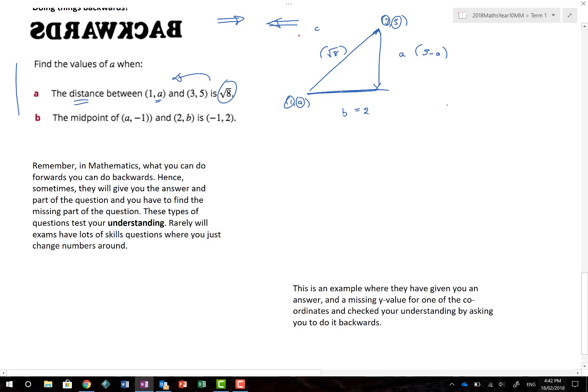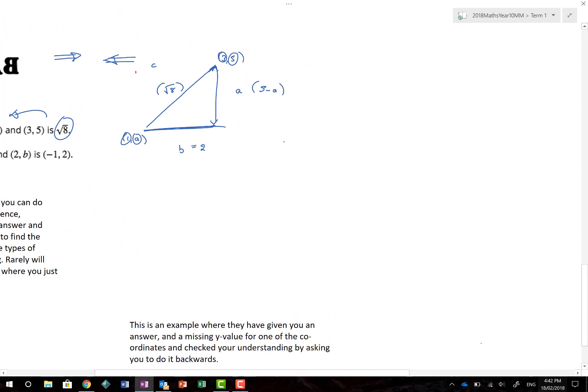So, now, we've actually just got a bit of algebra. And we shouldn't be scared of algebra. Those of you who want to do VCE will find algebra coming out of your toenails, which would be a bizarre thing to have happen. So, what do we now know? We know that this value squared, plus this value squared, is equal to that value squared. So, 5 minus A, all squared, plus B, which was 2 squared, must be equal to the square root of 8, all squared.